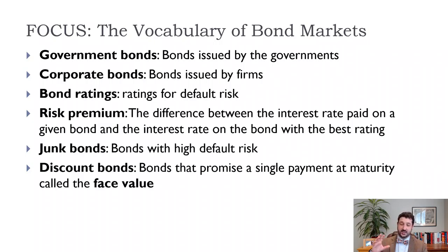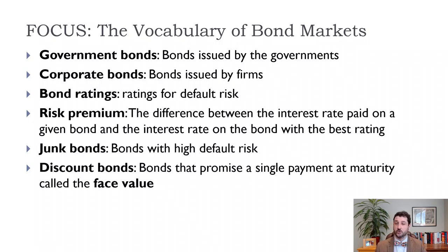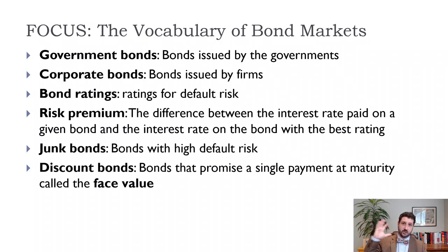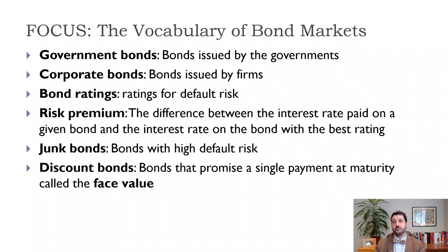Anything below the middle B ratings is usually called a junk bond. If it's a junk bond, the issuer has to pay really high interest rates because there's a high probability of default. The risk premium is the difference between those really safe bonds — like Treasury Bills and Treasury Bonds, considered the gold standard — and the interest rates that riskier corporate bonds have to pay. There can also be a risk premium between U.S. government bonds and bonds of other countries if investors think those countries are more likely to default.